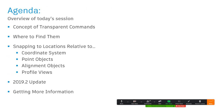Our agenda today covers Civil 3D's transparent commands. We'll start by defining the transparent command and talking about its history, then look at where we can find them in the interface, and how we can use them in practical examples to snap to locations relative to the coordinate system, point objects, alignment objects, and profile views. The transparent tools got a facelift in 2019.2, so towards the end of the session I'll show you some of the new functionality. Everything I show you will work regardless of the version of Civil 3D you're using.